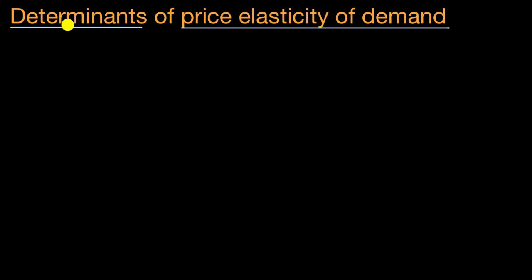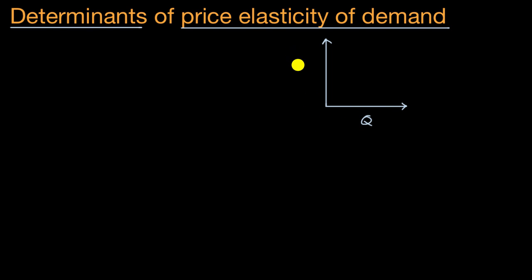Before we talk about those determinants or those factors, let's give ourselves a little review of what an elastic or an inelastic market might look like. Let me draw my price and quantity axes. Quantity on the horizontal axis, price on the vertical axis. Price elasticity of demand is percent change in quantity for a given percent change in price. A high elasticity would mean a large percent change in quantity for a given percent change in price.